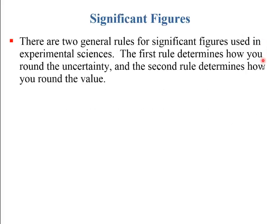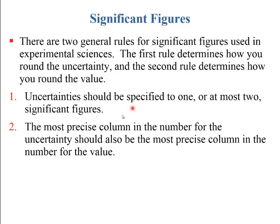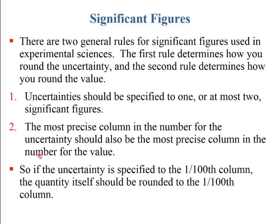There are two rules for significant figures. Rule number one: you should only specify the uncertainty to one significant figure, or maybe two (two is actually more common). Rule number two: once you have the uncertainty, the most precise column in the number for the uncertainty should match the most precise column in the number for the value. For example, if you specify the uncertainty to the hundredths place, then the value should also be rounded to the hundredths place.